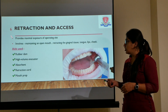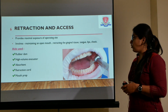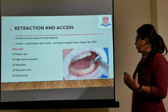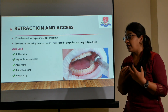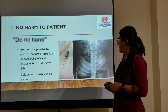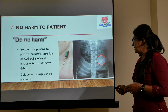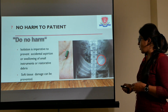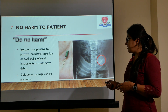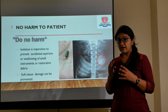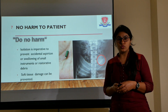Retraction access gives us maximal exposure of the operating site. It involves maintaining proper mouth opening so that we can work in the environment. Then, no harm to the patient — this is very important. This is an example where the patient has swallowed an endodontic file, which can lead to a lot of trouble. So if we isolate our operating field, we can prevent these accidents from happening.